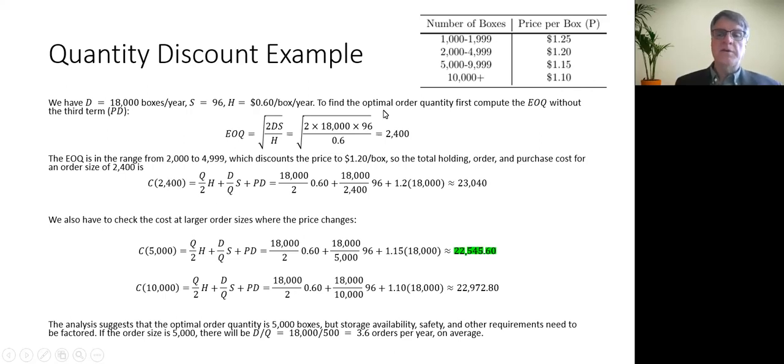But I do need to also check what happens if I go all the way up to 10,000. So as a final move here, you can plug in 10,000 for Q and your price is now the $1.10 associated with your discount level at the 10,000 order size level. And that comes in at $22,972, which is higher than the $22,545. So the best of this choice here is to go with an order size of 5,000.